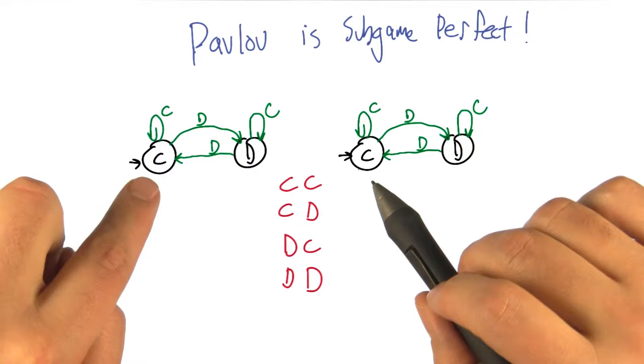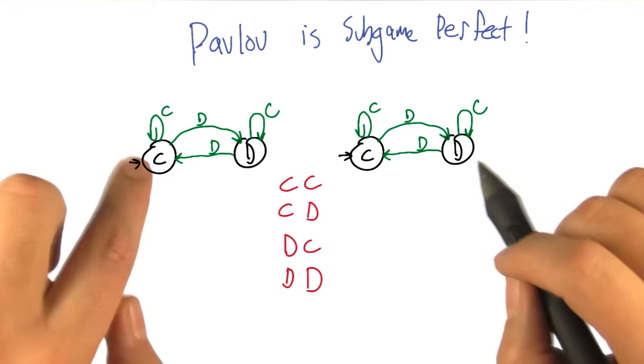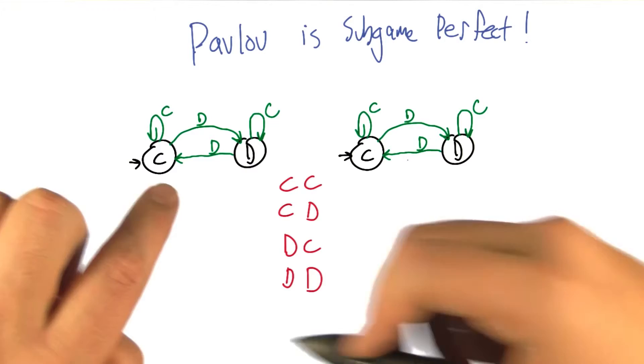They're both in the cooperation state, both in the defect state, one's cooperate and one's defect, one's defect and one's cooperate. So is it the case that no matter which state those are in, that the average reward is going to be mutual cooperation? So let's check.